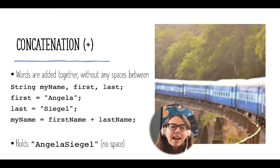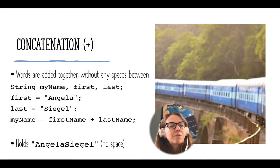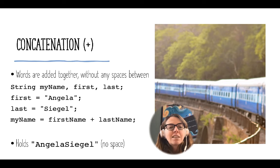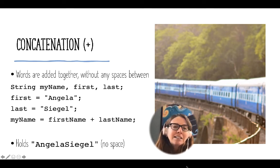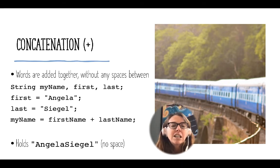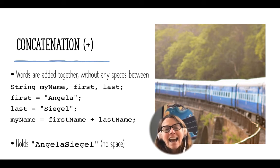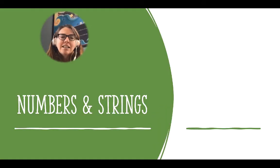Concatenation uses the plus operator, so it looks like addition — we're adding two words together. It's important to remember that concatenation does not add any spaces between. So if we have strings: firstName = 'Angela' and lastName = 'Siegel', and we set myName = firstName + lastName, what's held in myName is 'AngelaSiegel' with no space. Of course we can fix that by concatenating in a space.